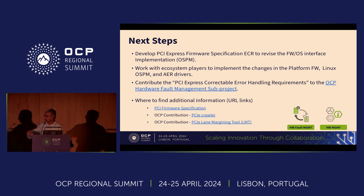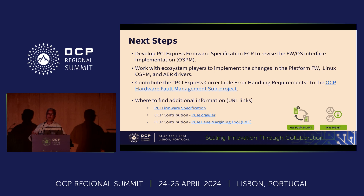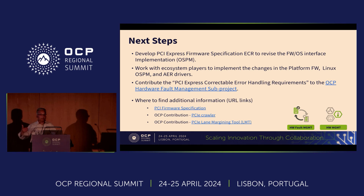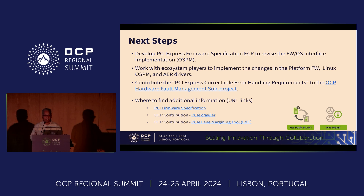There are links here, like the PCI firmware spec, in case you're interested in where the changes will happen — reach out to us and we can explain what we're proposing. There are additional contributions already being done in the PCI space: PCI crawler is one application we contributed in the past. There's also a lane margining tool — whenever the lane margin changes, it can result in receiver errors, which are also correctable errors. So it's important to monitor per-lane error rate, and the lane margining tool allows us to do that. It's already contributed and available on GitHub. With that, we'll stop. Any questions?